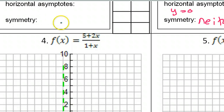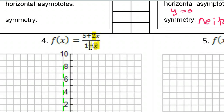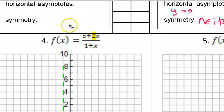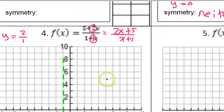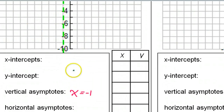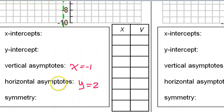Be careful — a common mistake would be to look at the five and the one, but those are not the leading coefficients. The leading coefficient is going to be in front of the highest variable. So the leading coefficients are two and one — two from the numerator and one from the denominator. These are not in standard form; if I rewrote this, it would be two x plus five and x plus one. So my horizontal asymptote, my a over c, is two over one, and that's just y equals two.